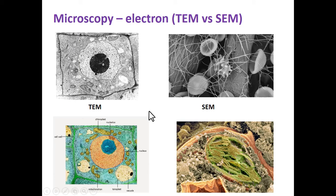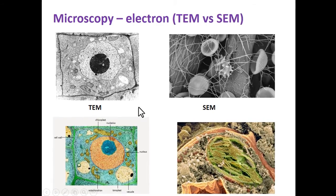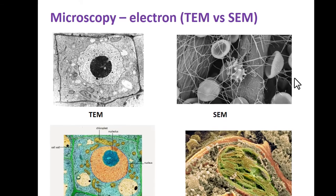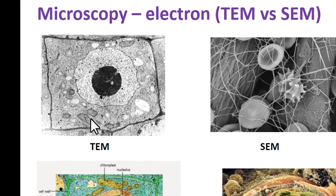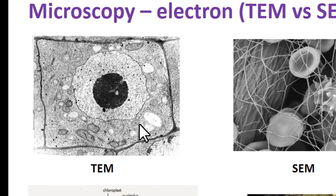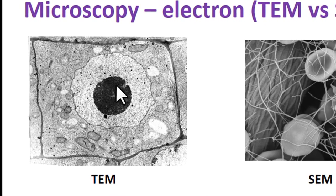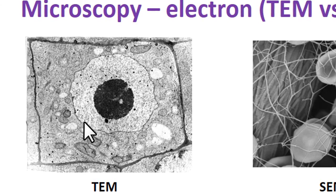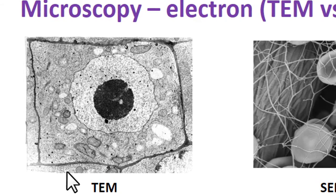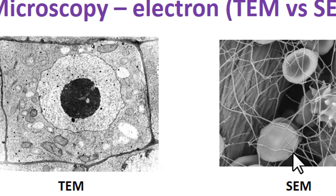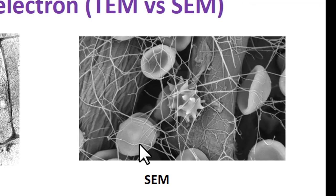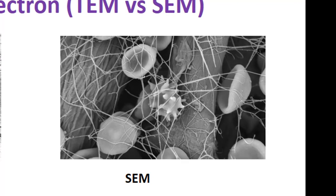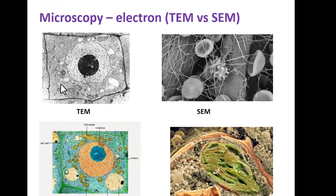To really get to fine detail, we need electron microscopy, and there are two main types. TEM stands for transmission, SEM stands for scanning. In transmission, you're actually shooting electrons through the cell, so you're seeing a lot more detail — there's a whole bunch of little organelles, there's the nucleolus and the nucleus. Versus scanning, where you're getting the surface. Here are some red blood cells and macrophages caught in a fibrin network — you see 3D in depth, whereas transmission is more of a flat 2D image but gives you lots of details.